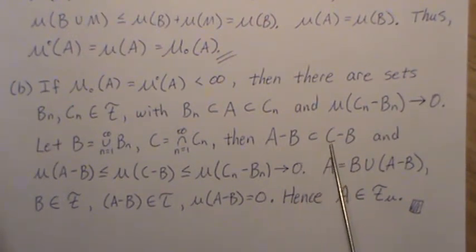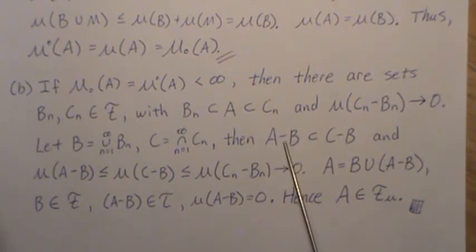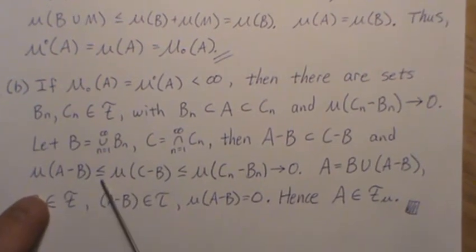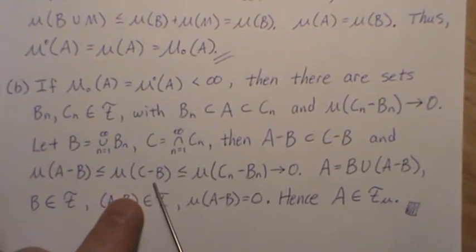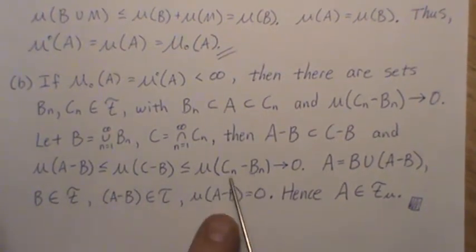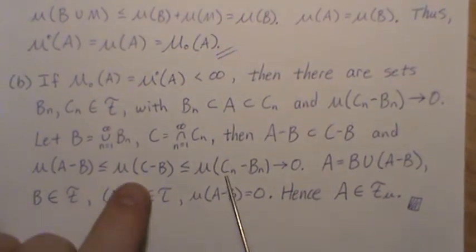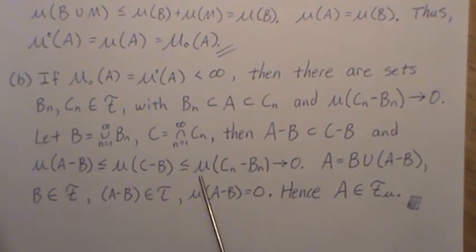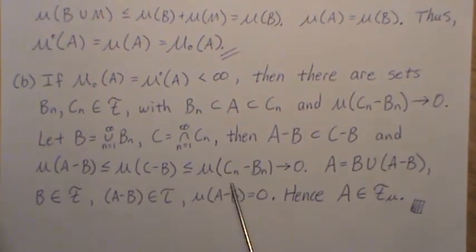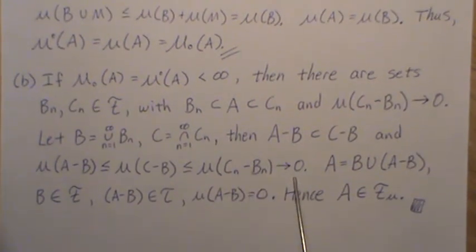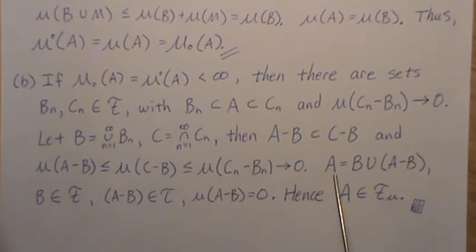Because C is bigger than A, so this has to be larger than this set. And that means that the measure of A minus B is less than or equal to the measure of C minus B. But that's less than or equal to the measure of C_n minus B_n because this is a larger set than that, and this is a smaller set than B, so this set is larger than this one. So that means the measure is bigger. But as N goes to infinity, this measure goes to zero.